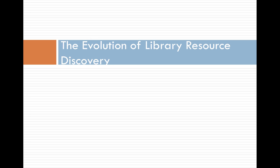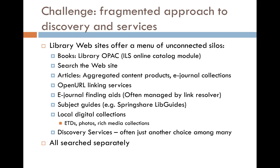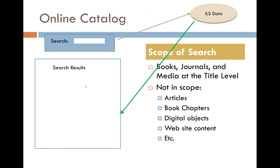I want to talk about the evolution of patron catalog interfaces and discovery for libraries and their current state. When you look at a library's website, there are just so many different things offered, including online catalogs, a search box, different finding aids for getting to articles, lists of e-journals, web guides, and others. It can be quite a challenge for patrons to manage dealing with all of those in separate ways. Part of what we want to accomplish is to bring more things together where it makes sense.